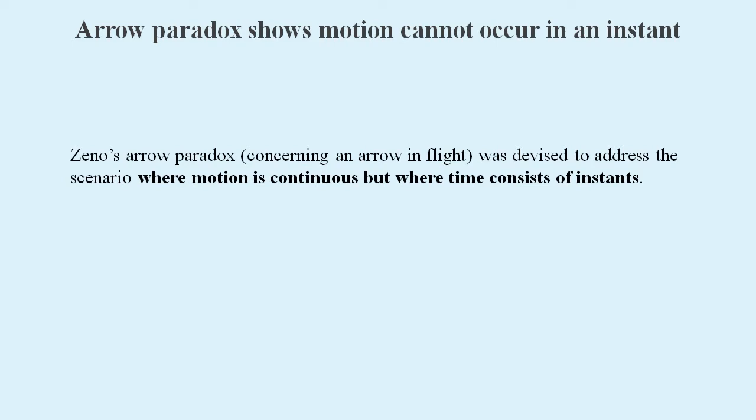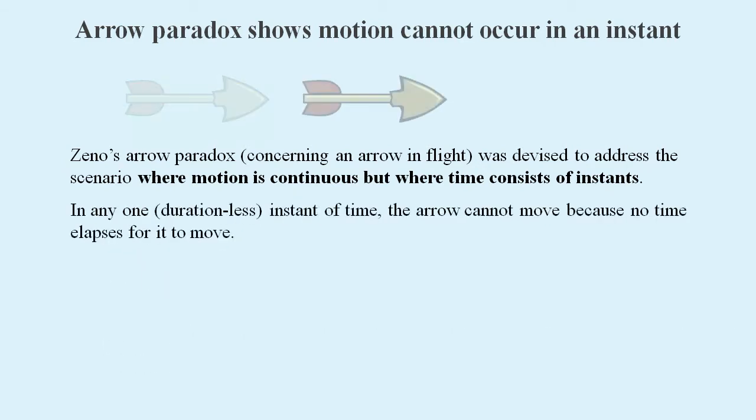Zeno also devised a paradox about an arrow in flight to address a scenario where motion is continuous but where time consists of instants. If the arrow's movement consists of it being in different positions at different instants of time, then the arrow is not really moving, because no time elapses in these instants of time.